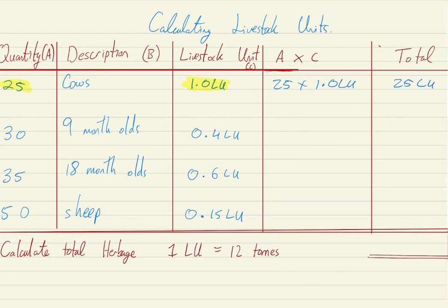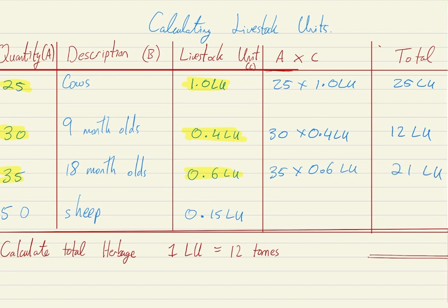We have 30 nine-month-old calves multiplied by 0.4 livestock units, giving us a total of 12. We have 35 eighteen-month-old bullocks or heifers multiplied by 0.6 livestock units, giving us 21 livestock units. Lastly, we have 50 sheep multiplied by 0.15 livestock units, giving us 7.5 livestock units.